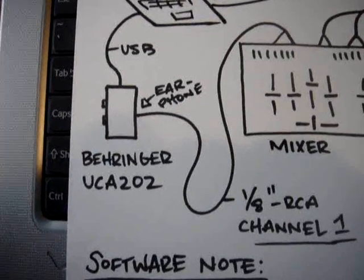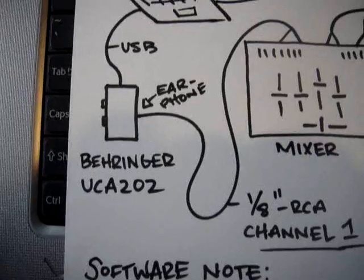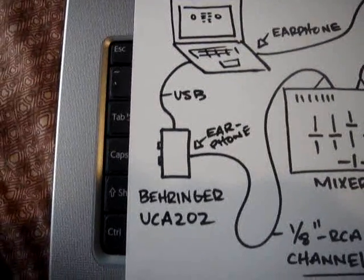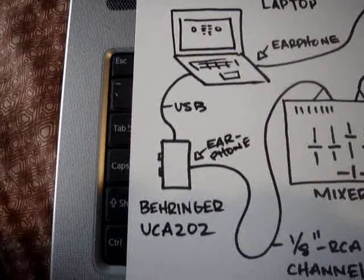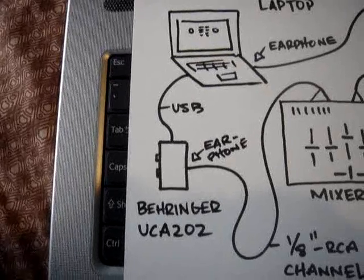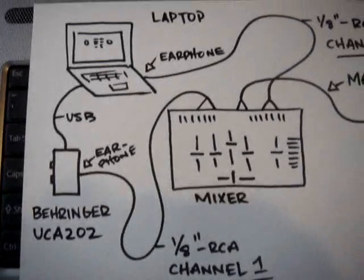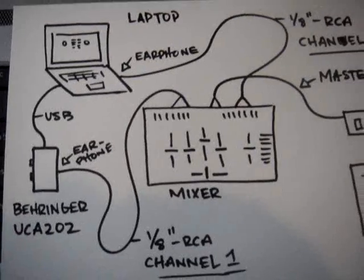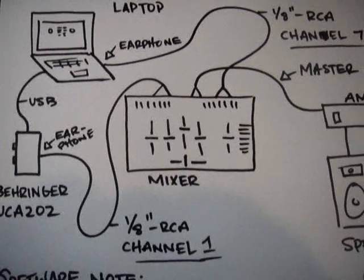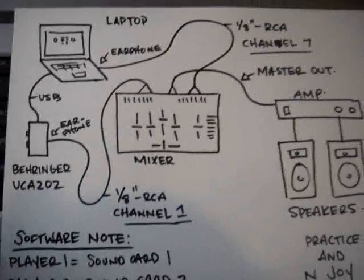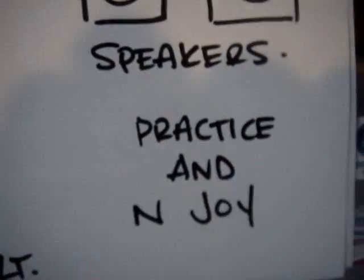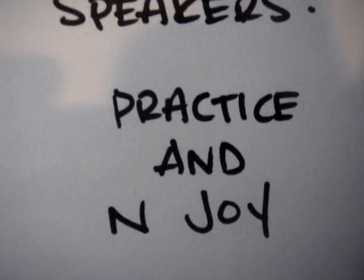The Behringer UCA202 is actually pretty affordable — I think it's about $30 US — and I haven't had any problems with it. It also has a digital output, which for those of you more focused on sound quality is supposed to be wonderful. But that's pretty much my setup right there, and I'll let you guys go with that one.